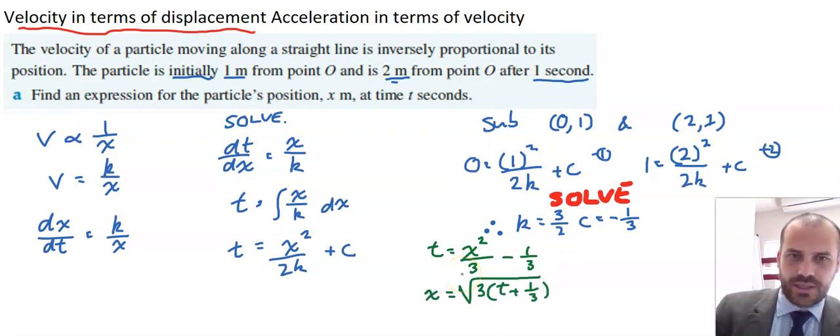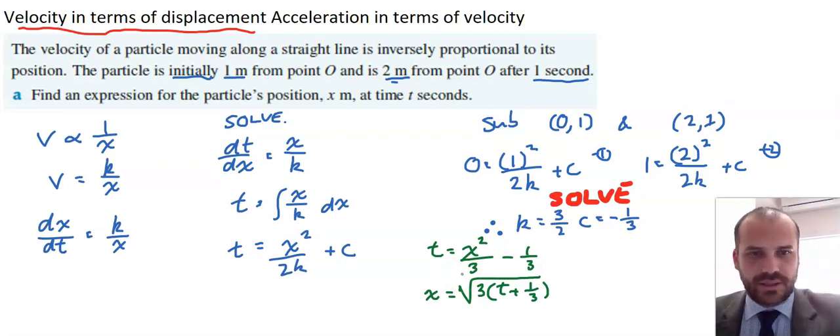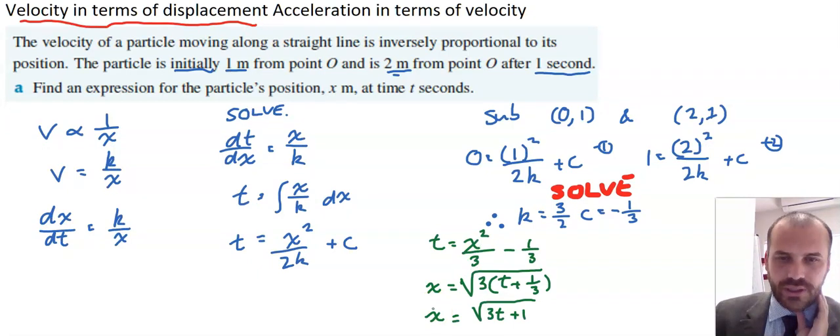But we get root(3t + 1/3) is equal to x, and there's our answer. A nicer version of it, just expanding the brackets there, root(3t + 1).